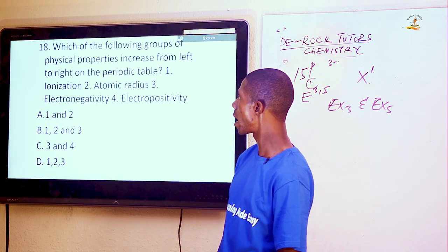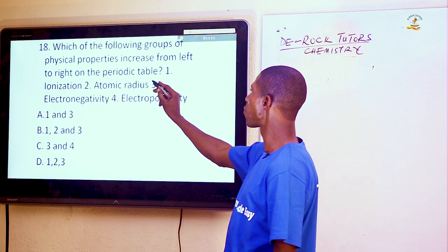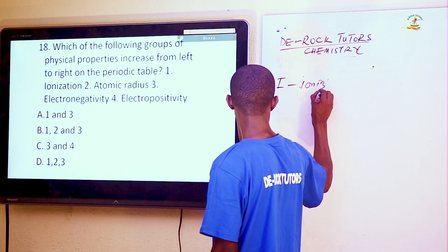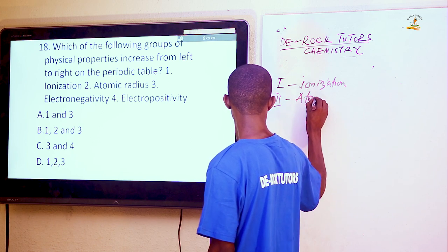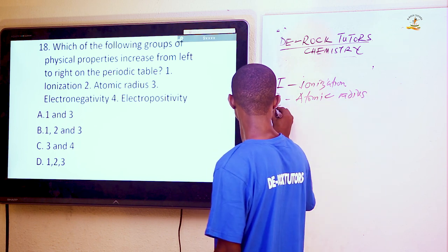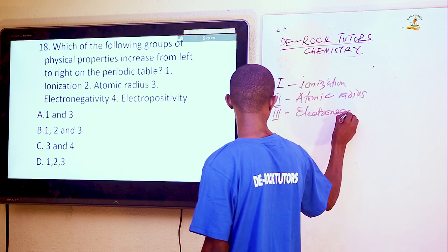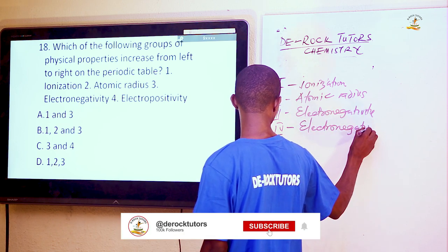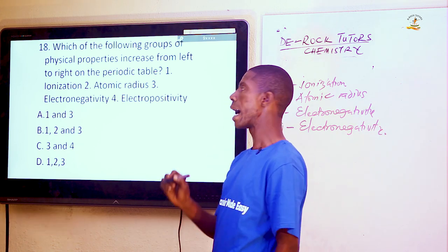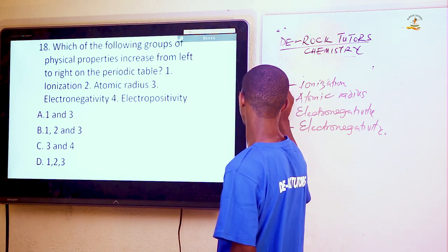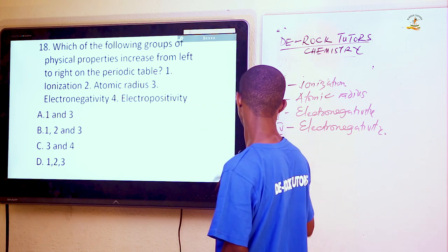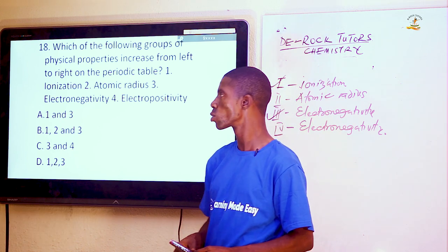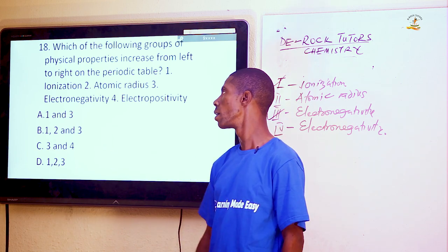Question 18: Which group of physical properties increases from left to right on the periodic table? Ionization energy increases across a period; atomic radius increases down a group. Electronegativity increases across a period; electropositivity increases down a group. So ionization energy and electronegativity — properties 1 and 3 — both increase across the period, which is option A.